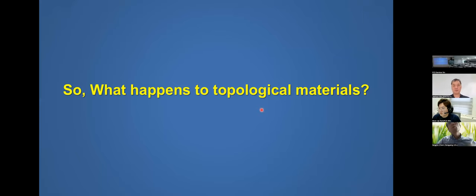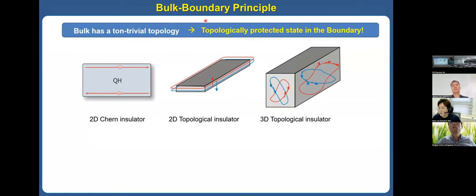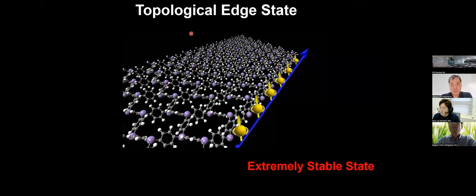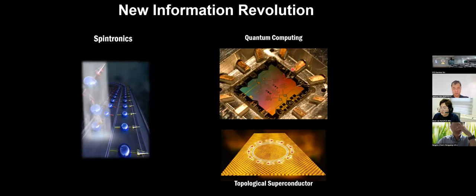The next question is: what happens to topological materials, and why are they important? We already know there is the bulk-boundary correspondence. If the bulk has a non-trivial topology, then at the boundary there are topologically protected edge states or surface states. For example, for the two-dimensional Chern insulator, at the edge there is a chiral edge state. The important point is that these topological edge states are extremely stable — they can transport quantum information without any dissipation. Therefore, people think that topological materials are expected to drive new revolutions such as spintronics and quantum computation.